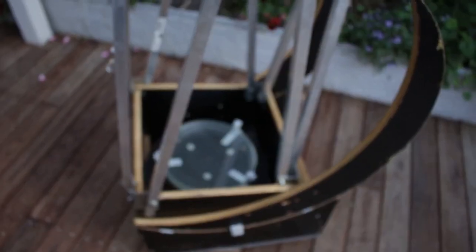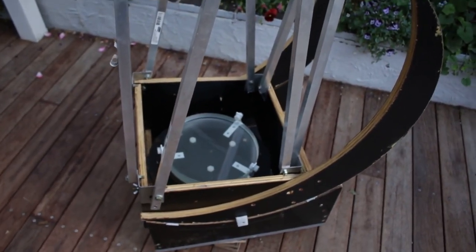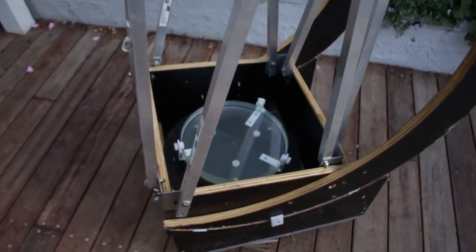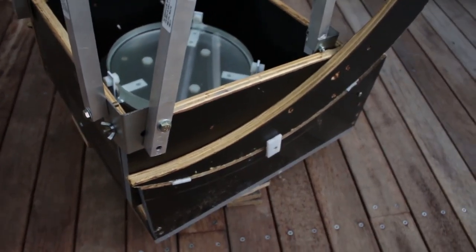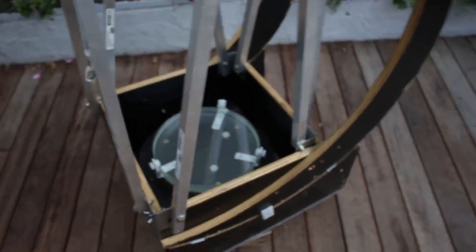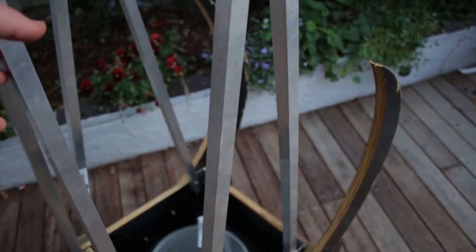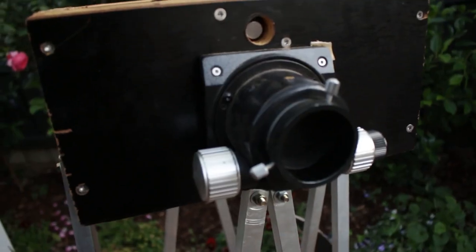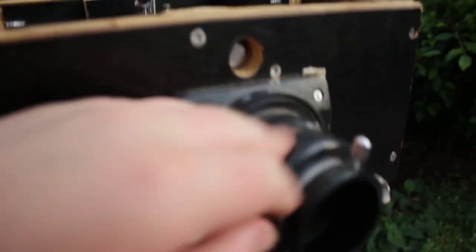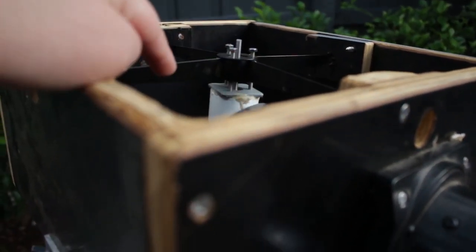Once the primary mirror is finished, then we move on to the actual structure of the telescope. First, down here, we have the mirror box, the lower tube assembly. Then, we have truss poles, which I'll explain more about soon. Then we have the upper tube. The upper tube houses our focuser, our secondary mirror, and our spider.